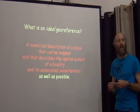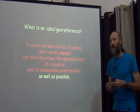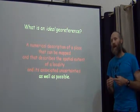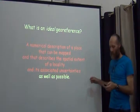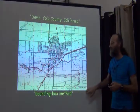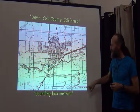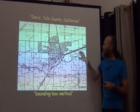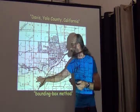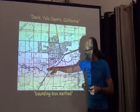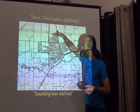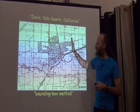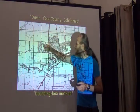Those are two examples of high-quality georeferencing methods, but there's one step further — to do the best we possibly can. If I step back to a bounding box method, you can see that the bounding box includes plenty of things that are not Davis. Even if I make my box as small as possible while still including all of Davis, there's still stuff in the middle that's not Davis.